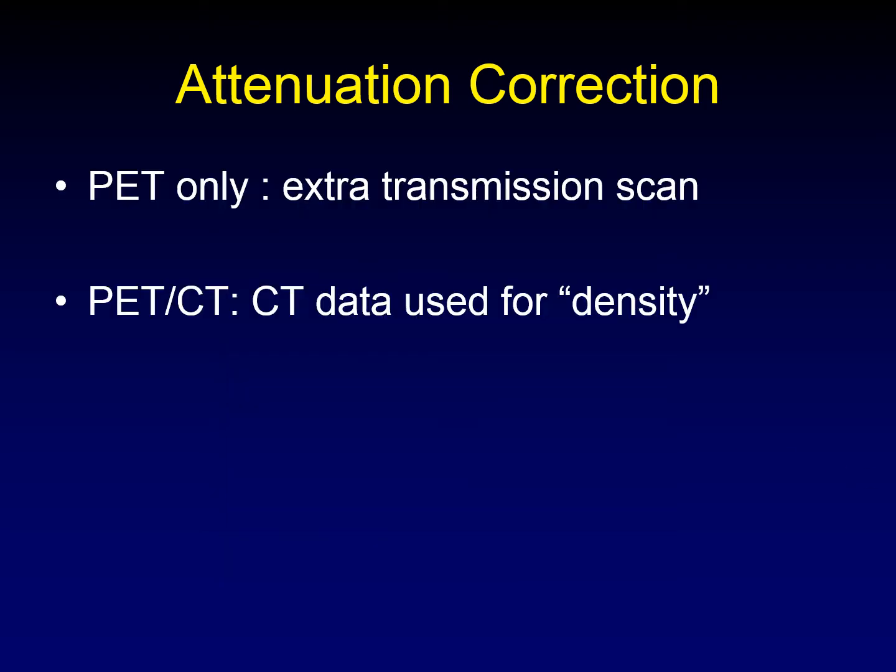There's more than one way to correct attenuation. When we only had PET, we used to do an extra transmission scan to figure out how dense the body was at different parts. Once we started using combined PET-CT, we could use the CT data to correct for different densities in the body. It turns out CT is a really good approximation for the attenuation that these high-energy photons undergo, so we can use the CT for our mathematical models.